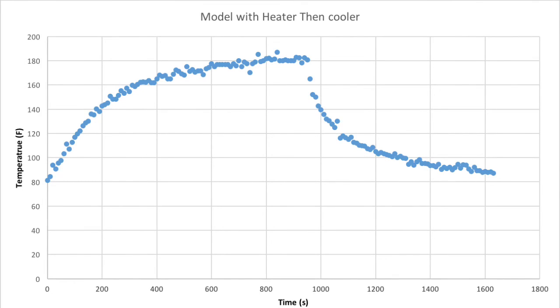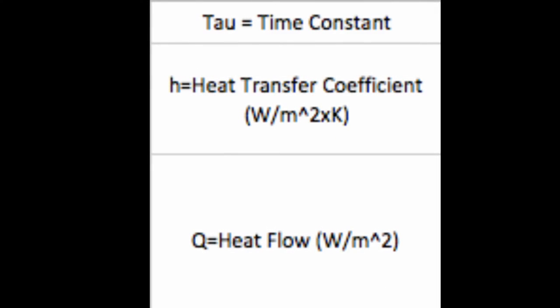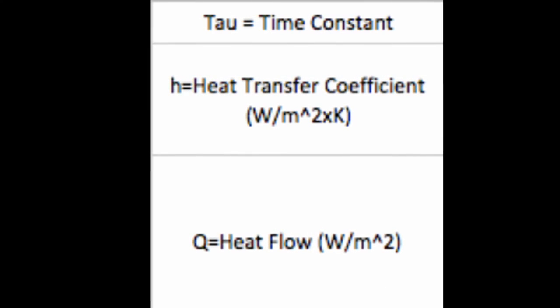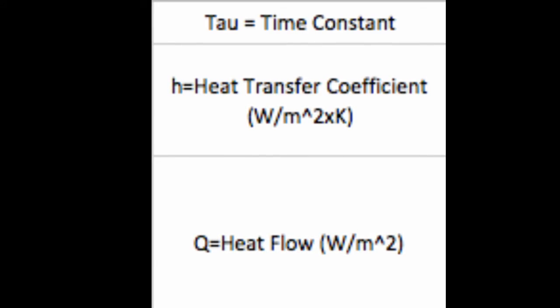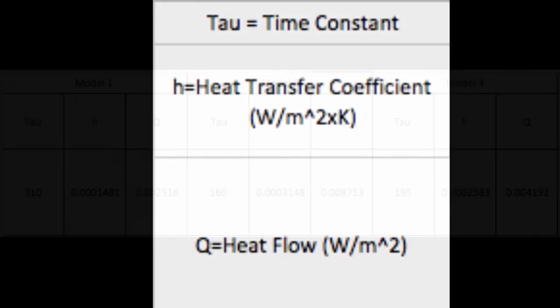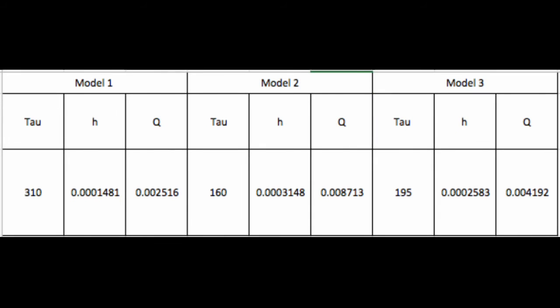This is the model from our third round of data collection. With the heater turned on and then once it reaches a peak value the heater is turned off and the cooler is turned on. This reaches the lower temperature faster than the two previous models and helps us measure the power of cooling. Tau and H are constants here which we use to help calculate Q, the heat flow. In this next table you can see our individual time constant, heat transfer coefficient and heat rate or Q values for each of the three models.